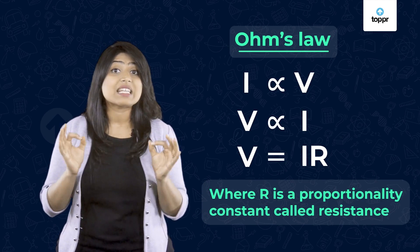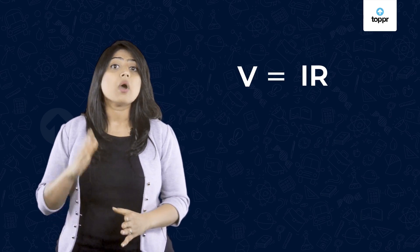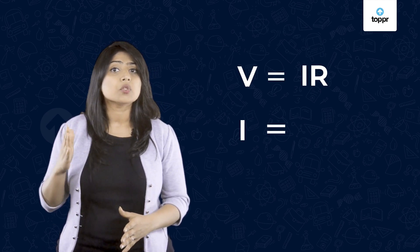So, the expression becomes V equals IR. We can rearrange and write it as I equals V upon R.